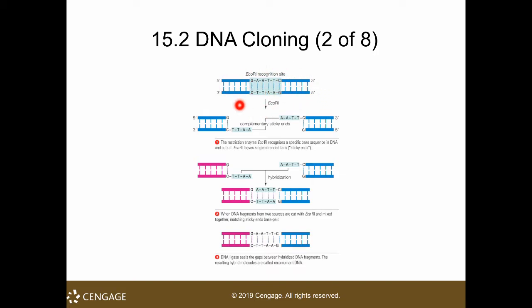A palindromic sequence reads the same whether you read it from left to right or right to left. The ECO-R1 recognition sequence — G, A, A, T, T, C — is palindromic. All restriction sites are palindromic sequences. ECO-R1 will cut this sequence asymmetrically, producing sticky ends.